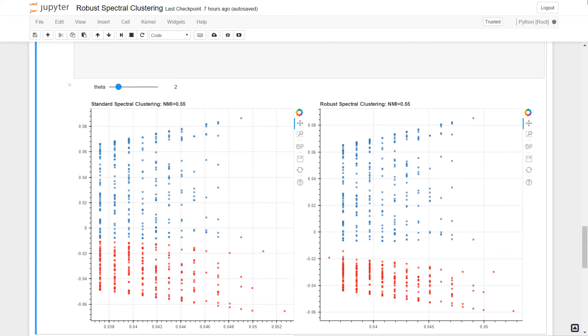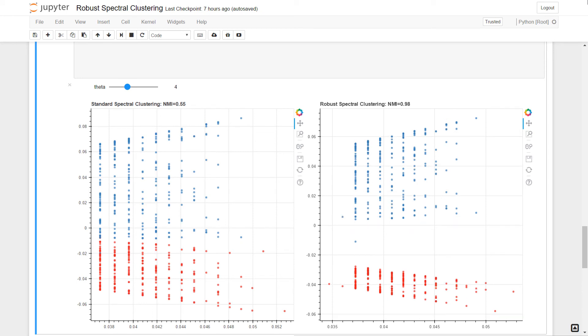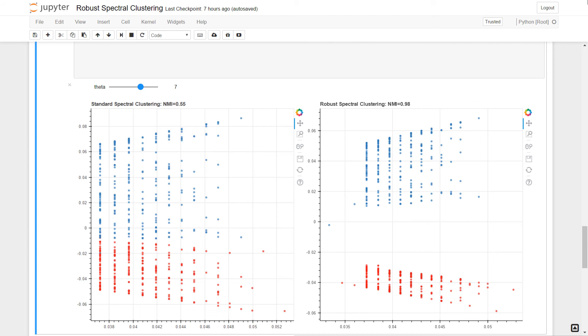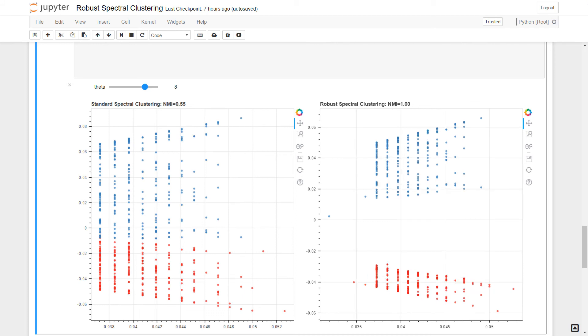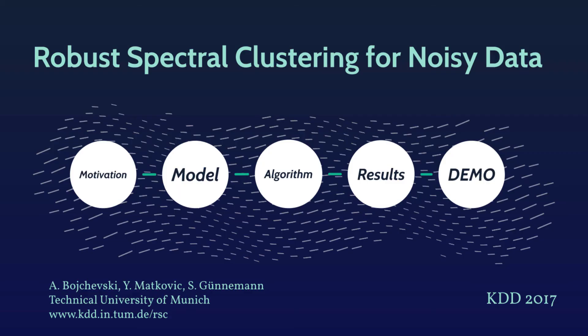However, if we allow our method to detect and remove more and more corruptions, the two clusters start to emerge. This is also reflected in the NMI scores. Once we remove enough corruptions, the clusters become easily separable. For more details, please check out our paper.